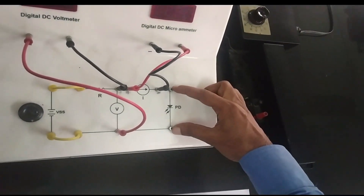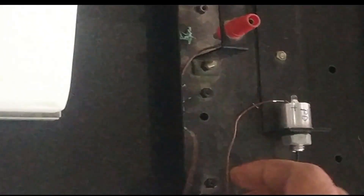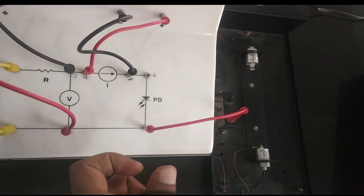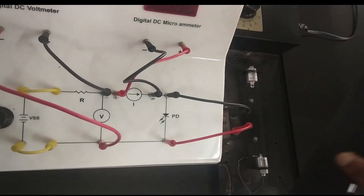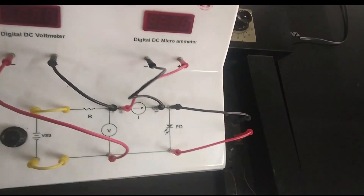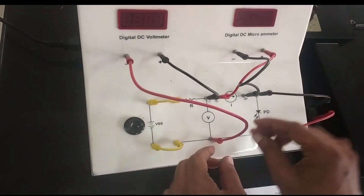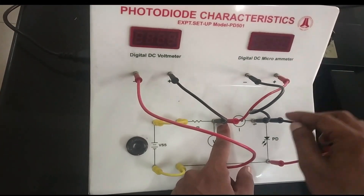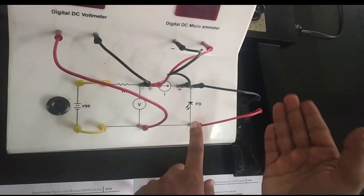Here we have the photodiode setup; the photodiode has two terminals — one positive and one negative. Connect the photodiode into the circuit. Close the housing to avoid any natural light effect. To repeat: connect the power supply, then the voltmeter (negative to negative, positive to positive), then the ammeter (positive to positive, negative to negative), and finally connect the photodiode to the circuit.